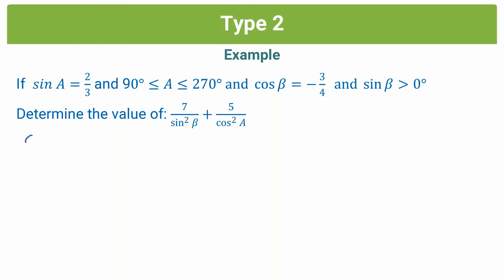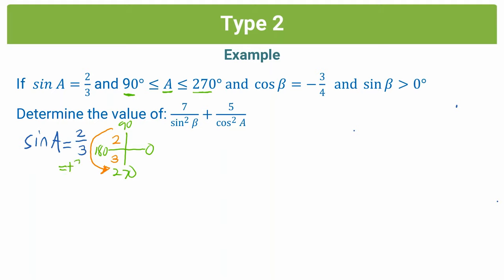So step one: for A, we are already in the form of trig function equals number. Now we can go on to step two, which is to look at our restriction. We are told that A lies between 90 and 270. If we put that on our Cartesian, the restriction tells us our possible quadrants are quadrants 2 and 3, because those lie between 90 and 270. And looking at our equation, we know that sine A equals positive 2 over 3, and sine is only positive in quadrants 1 and 2. So from these two Cartesians, our common quadrant is quadrant 2. So A must lie in quadrant 2, where x is negative and y is positive.